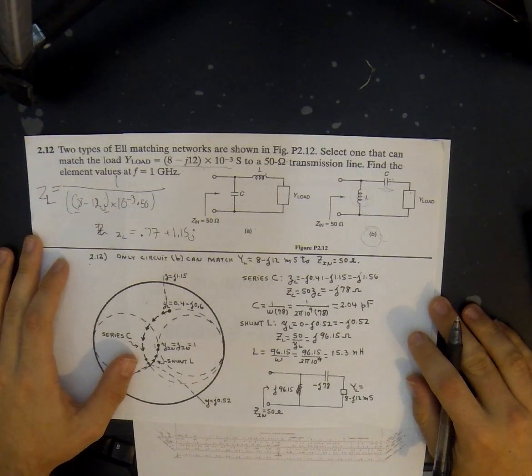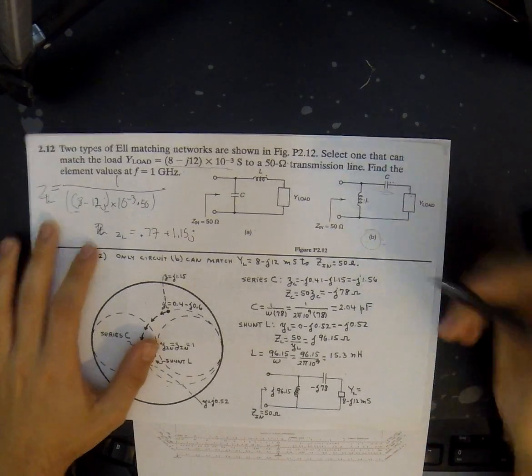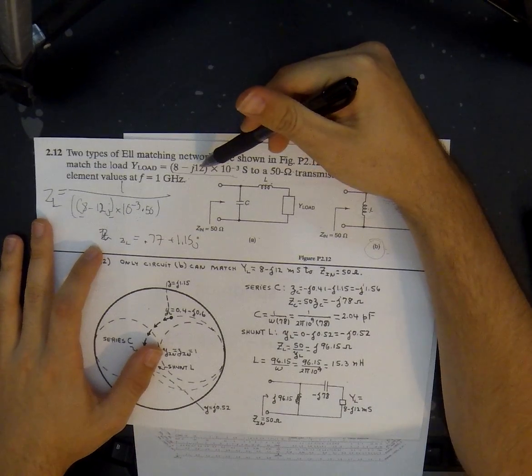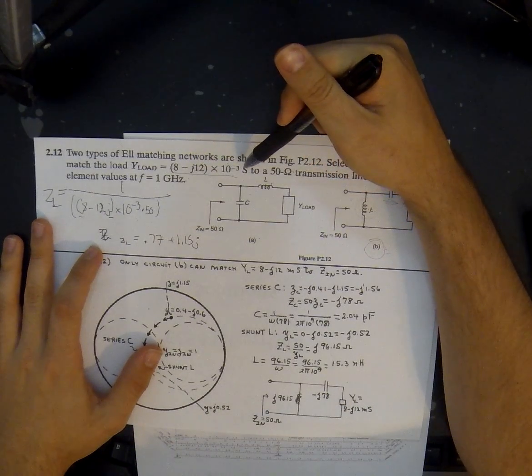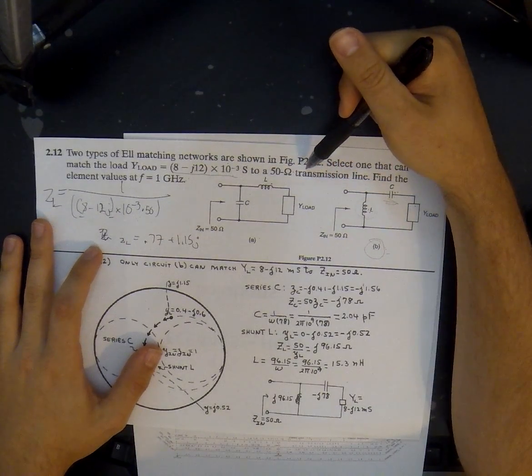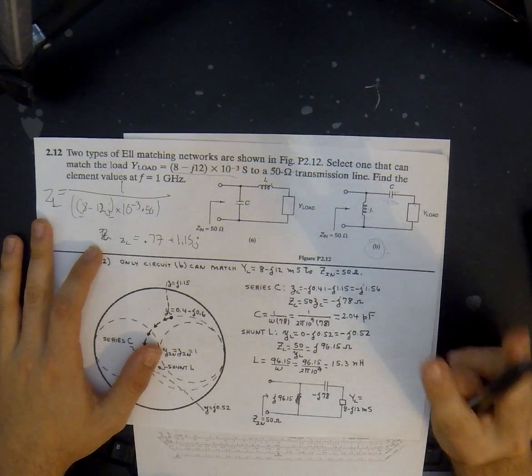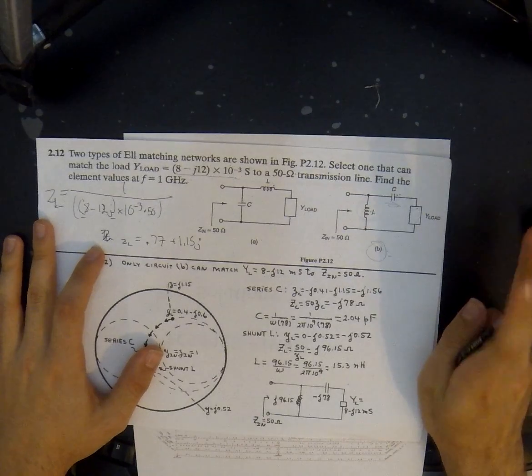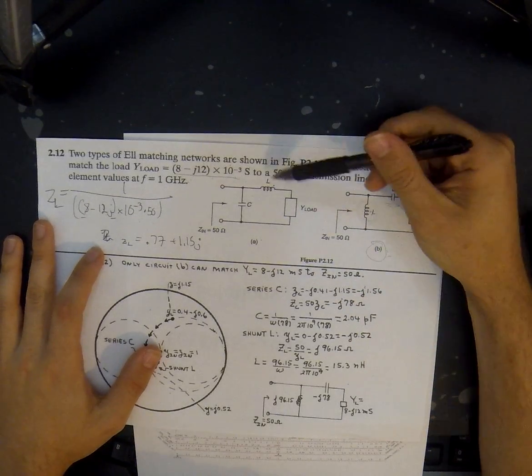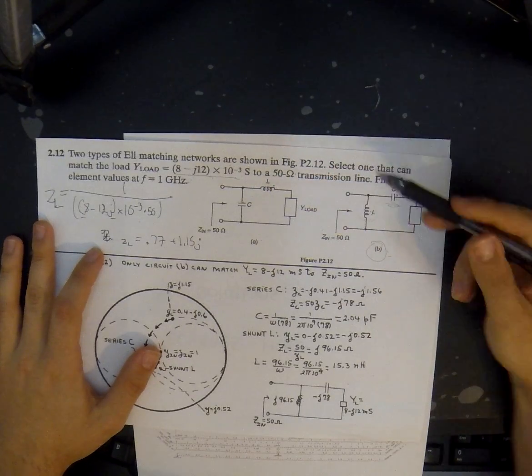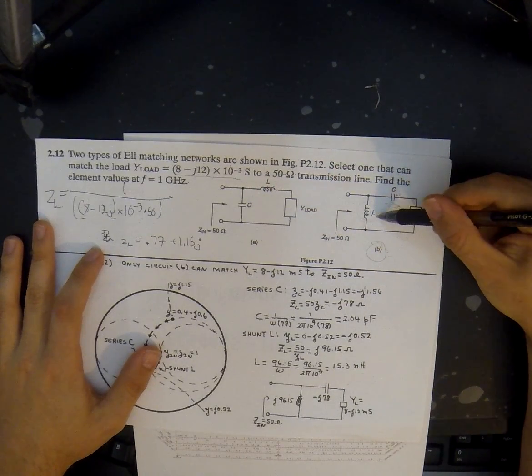Hi there. In this question, we're going to go over a basic LC matching network for a given load. This question specifically states that the load is 8 minus j12 times 10 to the negative third Siemens. It's a 50 ohm transmission line, and the frequency is 1 gigahertz. We're given two circuit options: a series inductor and a shunt capacitor, or a series capacitor and a shunt inductor.